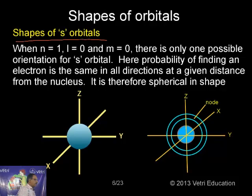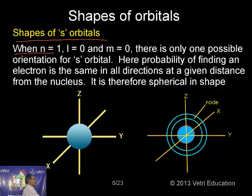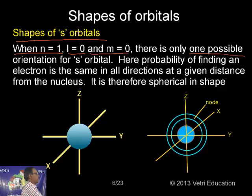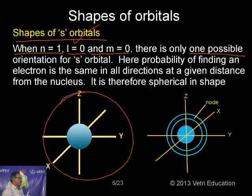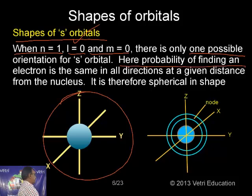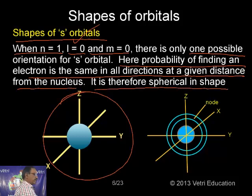Now let's look at the shape of the s orbital. When n = 1 (first level), l = 0, subshell 0, and there is only one possible orientation — this is the s orbital. When l = 0, it is the s orbital. The probability of finding the electron is the same in all directions at a given distance from the nucleus — it has a spherical shape.